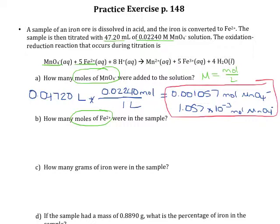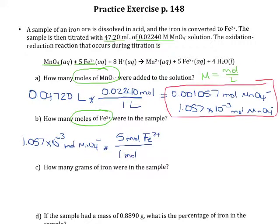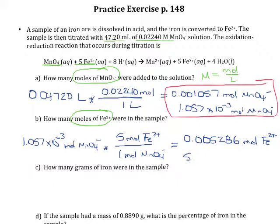So if we just write out that we start with 1.057 × 10⁻³ moles of MnO4-, and we know that we consume 5 moles of the Fe2+ cation for every mole of this substance, we get 0.005286 moles. Again, scientific notation may be easier here.